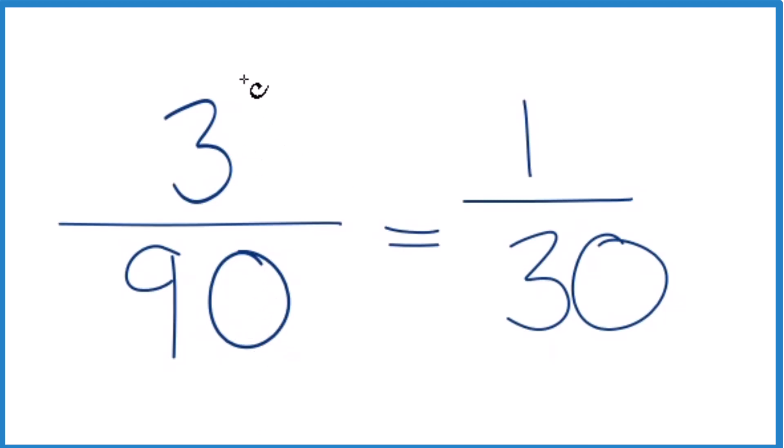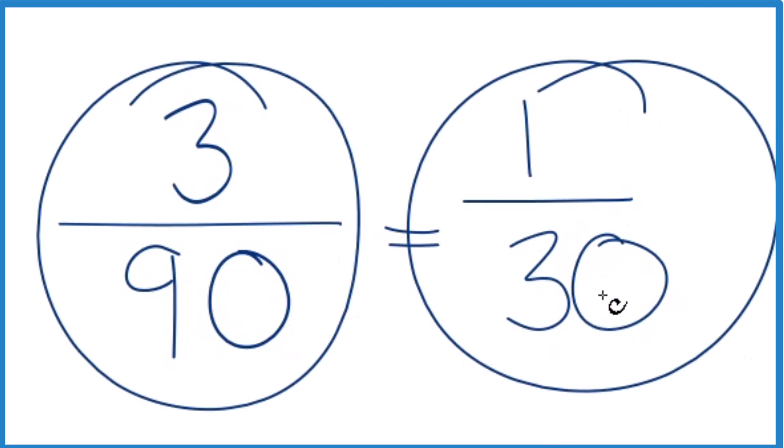It's just that we've simplified or reduced 3/90 here down to 1/30. And we can't reduce 1/30 any further.